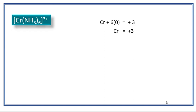Ammonia is a neutral molecule, so its oxidation state is zero. So chromium got oxidation state as plus three.